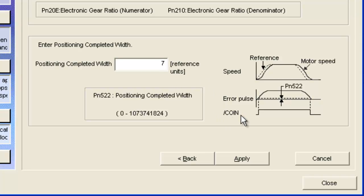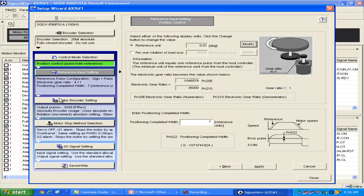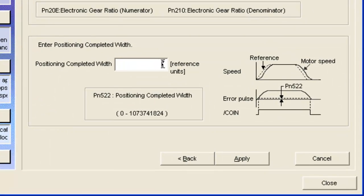And also on this page is the position completed width, which has to do with the coin output signal. Coin means position coincides. The actual position and the commanded position coincide within a certain tolerance set by the parameter PN522. And we had mentioned that in the application that we want this output, SO1, to turn on. So we get that signal back to the controller whenever the position is within 0.1 degrees. So if my reference unit is 0.01 degrees, and we're asking for the position completed within reference units, then I'll need 10 reference units to get to 0.1 degrees. And I'll hit apply for that.